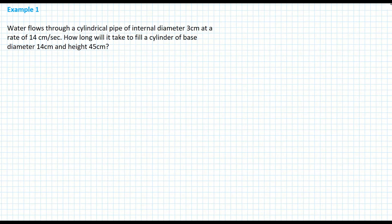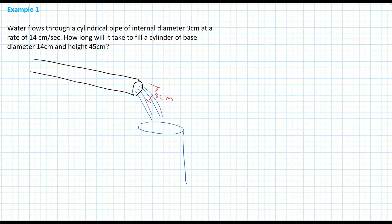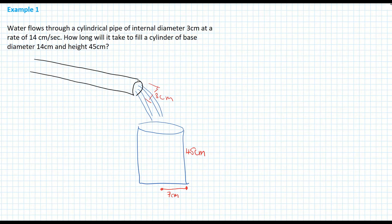Always sketch. Draw out your cylindrical pipe — water is flowing through it with a diameter of 3 centimetres. The water is then flowing into another cylinder. That second cylinder has a height of 45 centimetres and a diameter of 14 centimetres, which gives a radius of 7 centimetres.